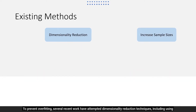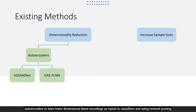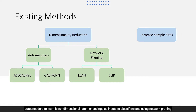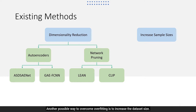To prevent overfitting, several recent works have attempted dimensionality reduction techniques, including using auto-encoders to learn lower-dimensional latent encodings as inputs to classifiers, and using network pruning techniques to remove unused nodes in the deep learning models in order to reduce the model complexity.